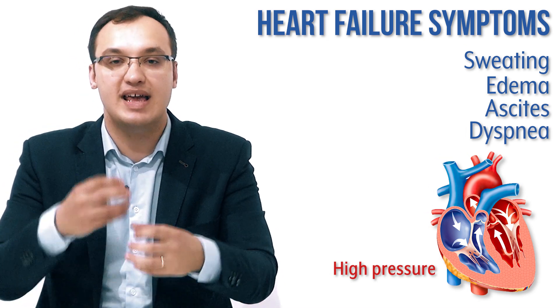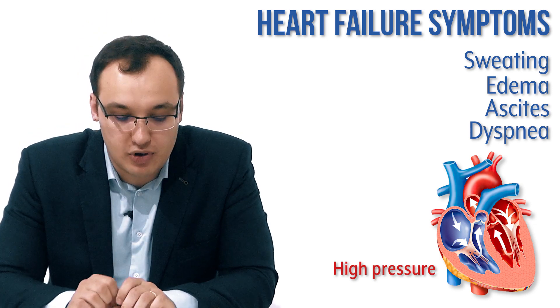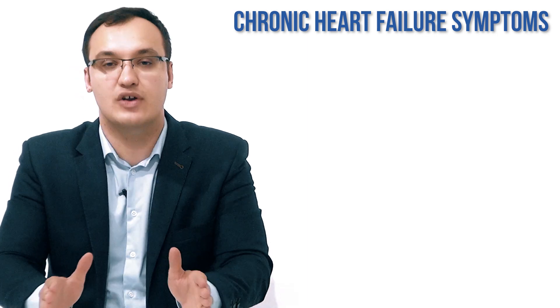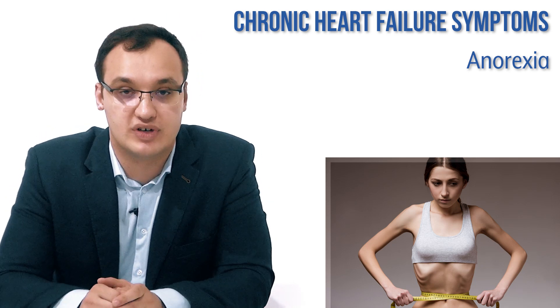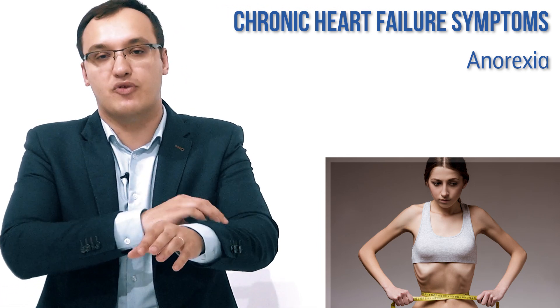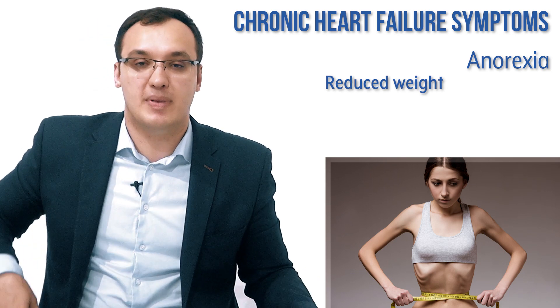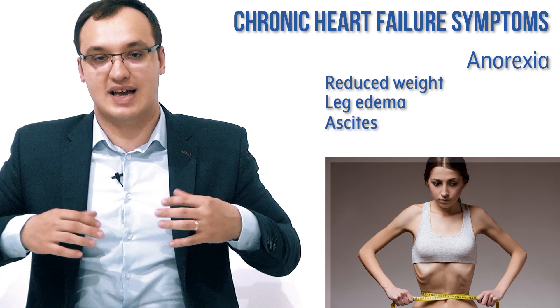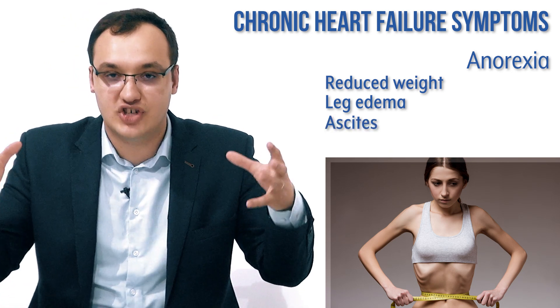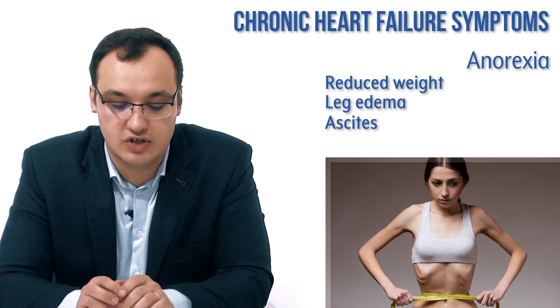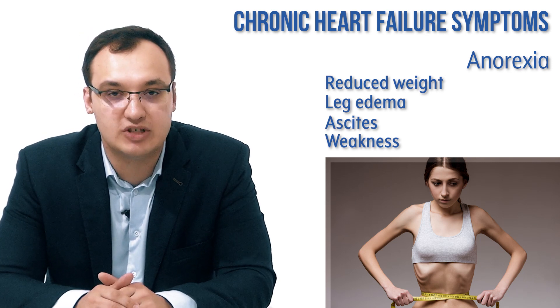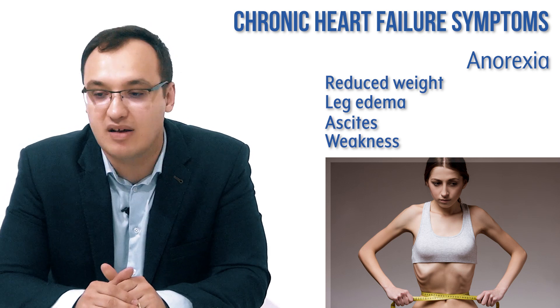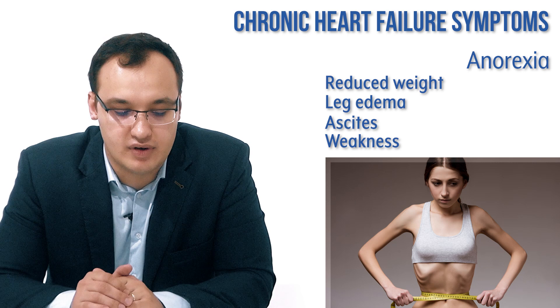The patient is sweating a lot and has difficulty breathing. In chronic heart failure, you can get very interesting symptoms like anorexia — a reduction of weight. Typically the arms and legs are very thin, but there is still leg edema or ascites. The patient's weight is generally reduced, and the patient feels very weak and fatigued — they cannot move much because they get difficulty breathing with just a little movement. This is a very severe type of heart failure.